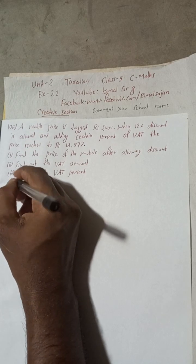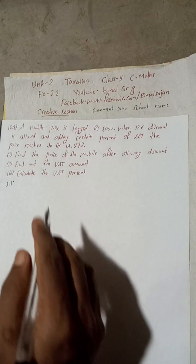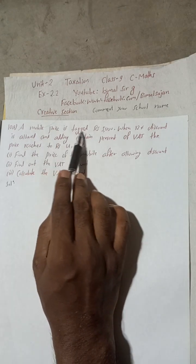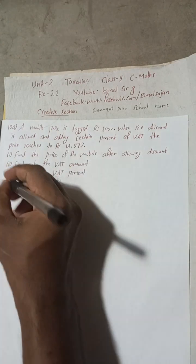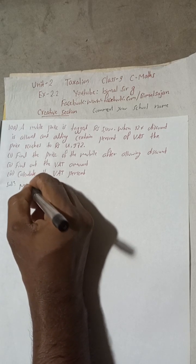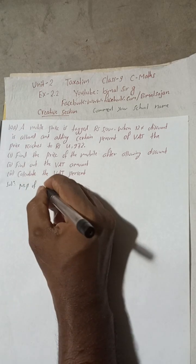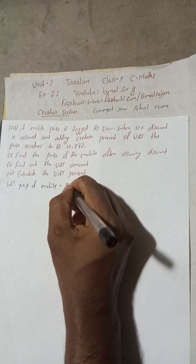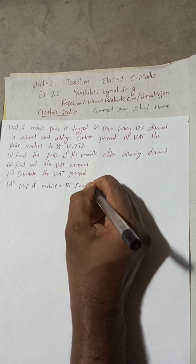Mobile price is tagged, that means this is the marked price. So marked price means this is the tag price. Marked price of mobile is Rs 5000.